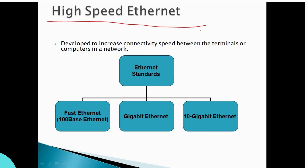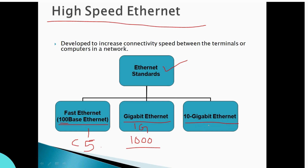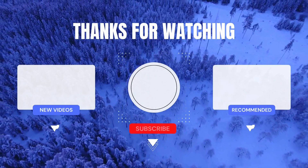For high-speed Ethernet standards: standard Ethernet uses UTP Cat5 cable. Fast Ethernet is 100Base Ethernet at 100 Mbps. Gigabit Ethernet is 1 Gbps (1000 Mbps). 10 Gigabit Ethernet runs at 10 Gbps. These are the main Ethernet speed standards.